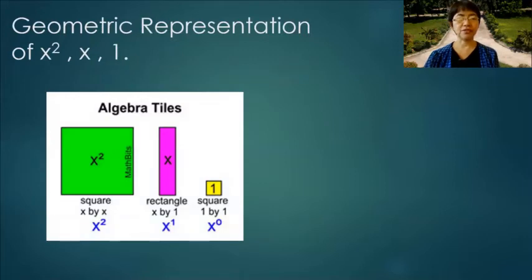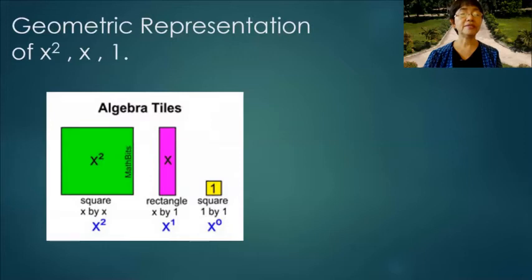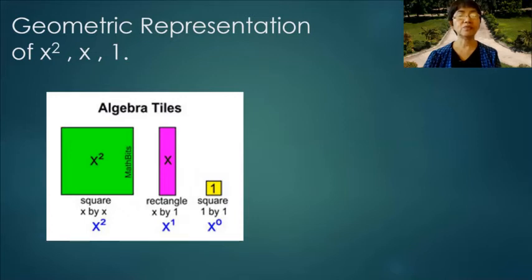Geometric representation of x squared, x, and 1: the green square is x by x, so it represents x squared. The pink strip or rectangle with dimensions x by 1 is equivalent to x, or x to the first power. The 1 by 1 square is x to the zero and represents a unit, or 1.